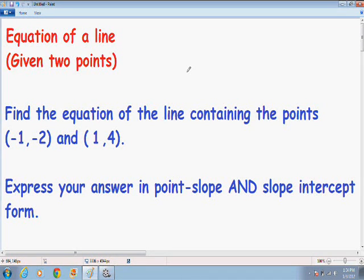If you notice the directions, it says find the equation of the line containing the points (-1, -2) and (1, 4). And it also says to express your answer in point-slope form and to also express your answer in slope-intercept form.